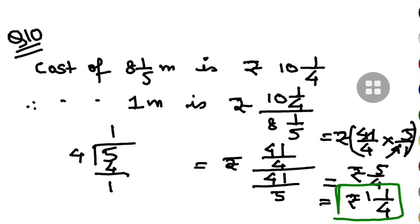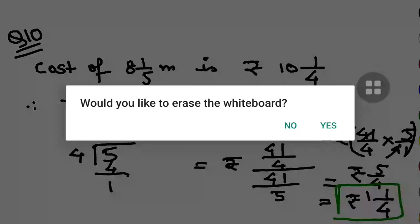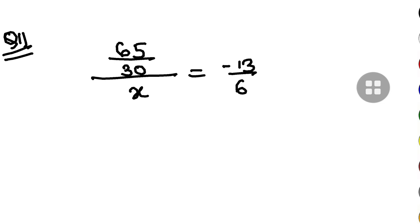Now let's shift to question number 11 and see what is there. The question is by what number should 65 by 30 be divided to get minus 13 by 6? By what number 65 by 30 should be divided. So let's say I am dividing by x and how much I should get? Minus 13 by 6. So I am dividing 65 by 30 by x so that I get minus 13 by 6. Now I have to find the value of x.